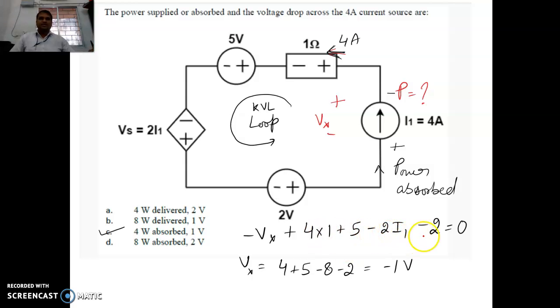In this way, we need to solve the value of Vx. And after solving, we are getting Vx equals minus 1 volt. So minus 1 volt means our assumption of the polarity is wrong. The usual polarity should be plus over here and minus here. The current is entering the plus terminal, so the power is absorbed by the source. That is why 4 watt is the power absorbed and the voltage is 1 volt. We get the answer is C.